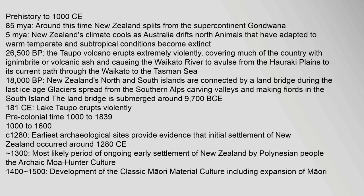Pre-colonial time 1000–1839. c.1280: Earliest archaeological sites provide evidence that initial settlement of New Zealand occurred around 1280 CE. 1300: Most likely period of ongoing early settlement of New Zealand by Polynesian people — the archaic Moa hunter culture. 1400–1500: Development of the classic Maori material culture, including expansion of Maori settlement.